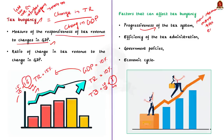The second factor is the efficiency of tax administration. A tax administration that is efficient and effective will be able to collect more taxes, making the entire tax system more buoyant. For example, the tax administration in India is relatively efficient, which is why tax buoyancy in India is higher than in many other countries.